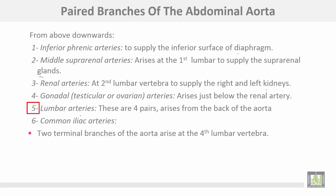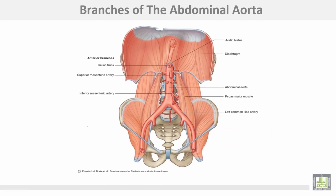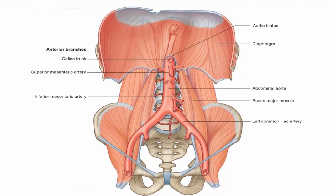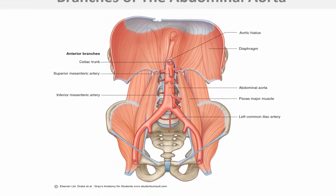The lumbar arteries — four pairs — arise from the back of the abdominal aorta. Lastly, the common iliac arteries are the two terminal branches of the aorta, arising at the fourth lumbar vertebra. In summary, the lateral paired branches arising from the sides include the renal, lumbar, gonadal, and common iliac arteries.